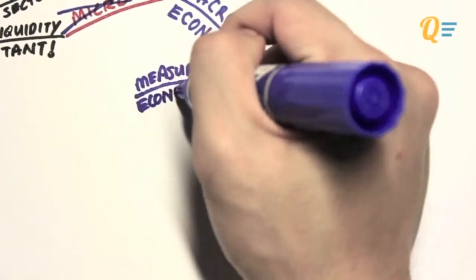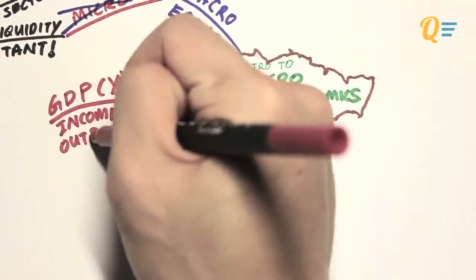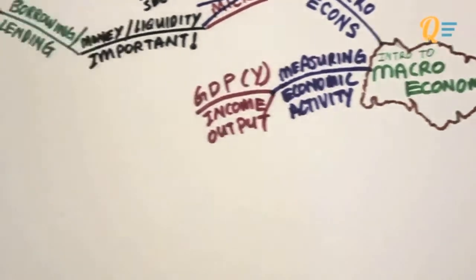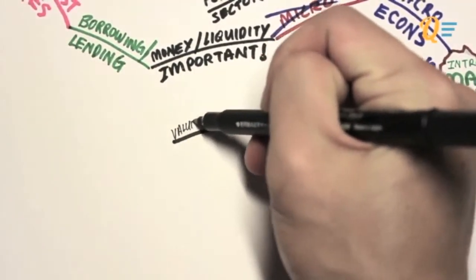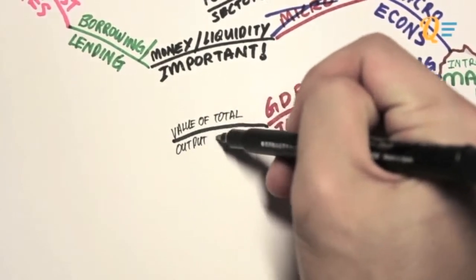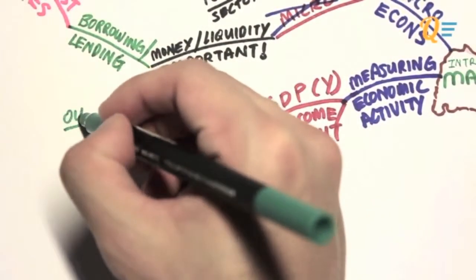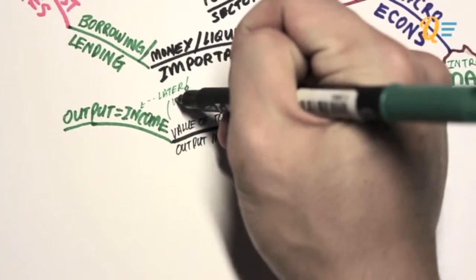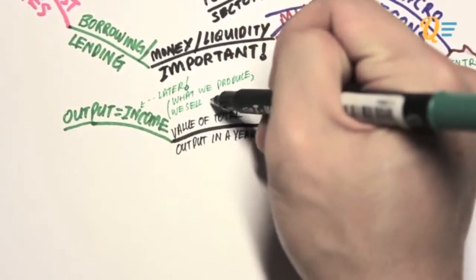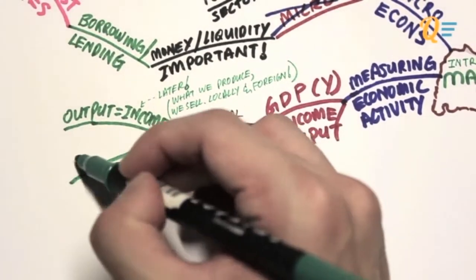How do we measure economic activity? What are the indicators we should be looking out for to determine whether the performance of the government is up to par? What we usually measure is this thing called GDP, which stands for Gross Domestic Product. It is also known as Income Output, and the short form for it is actually a capital Y. The GDP is the value of the total output of the economy in a particular year. We want to measure this because output equals to income. And if we know the income levels, then we know whether the government is running the economy properly or not. We're assuming that what we produce, we are going to sell it locally as well as to foreign countries, and this actually translates into income for us.